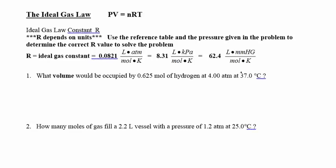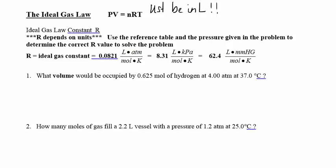This is called the ideal gas law: PV = nRT. Pressure and volume — volume must be in liters. In the combined gas law it didn't matter, but here it does. N is the number of moles, and temperature needs to be in Kelvin.